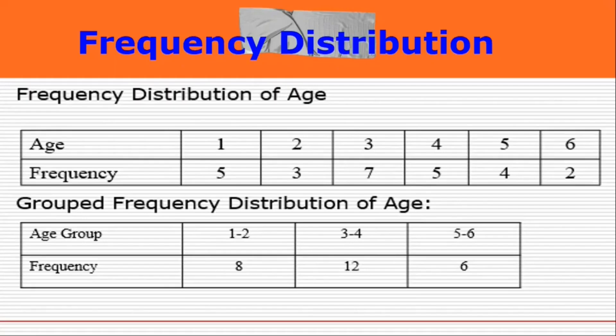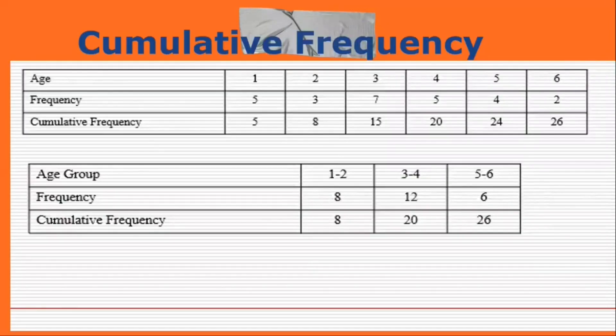Frequency distribution: consider a data set of 26 children of ages 1 to 6 years. The frequency distribution of the variable 'age' can be tabulated accordingly. Cumulative frequency shows the running total of frequencies from the table.